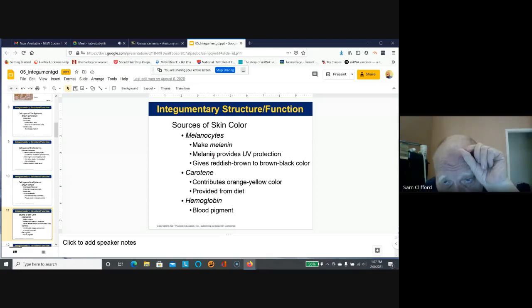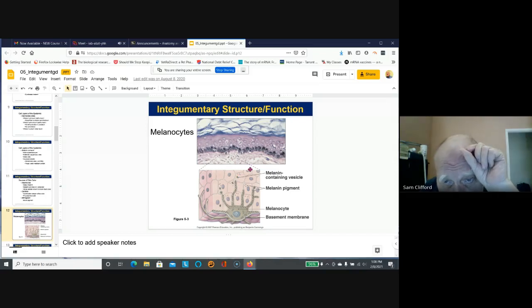Melanocytes make pigment. They provide UV protection. There's also keratin and hemoglobin blood pigment that's flowing in the arteries and veins. So melanocytes are a cell that secretes pigment. When you get sunburned you increase your melanin pigment, and depending upon your ancestry and your ethnic group, you have varying amounts of melanin pigment.